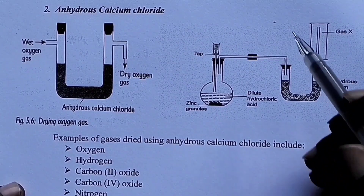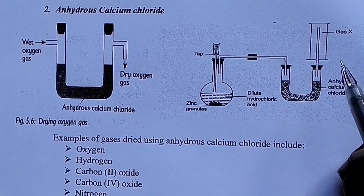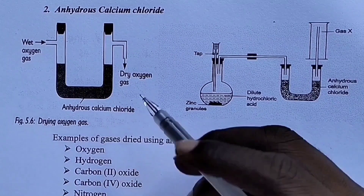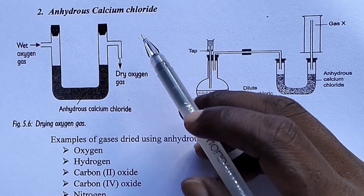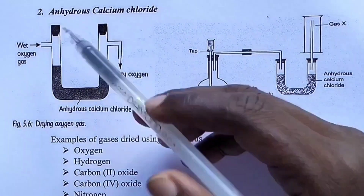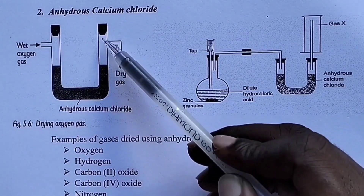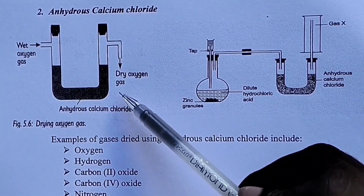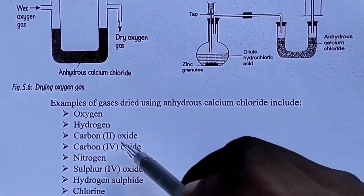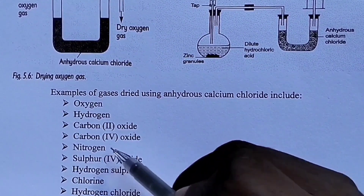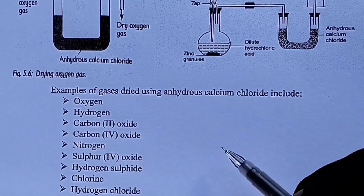The second drying agent is anhydrous calcium chloride, also called fused calcium chloride. It is placed in a U-tube. The wet gas enters the U-tube containing anhydrous calcium chloride, gets dried, and we obtain dry gas. Examples of gases dried using anhydrous calcium chloride include: oxygen gas, hydrogen gas, carbon monoxide gas, carbon dioxide gas, hydrogen sulfide gas, chlorine gas, and hydrogen chloride gas.